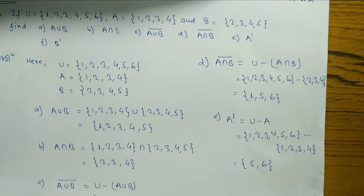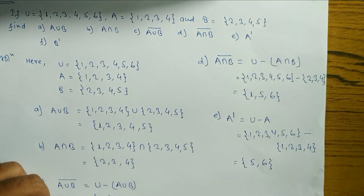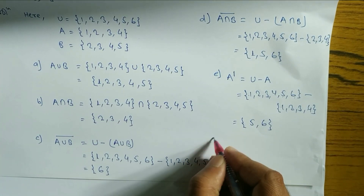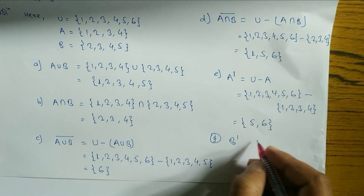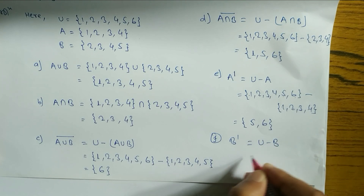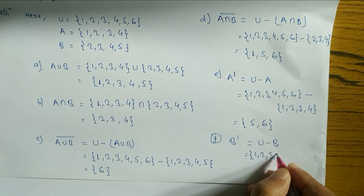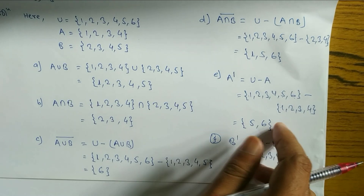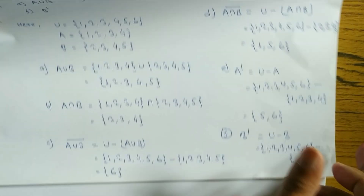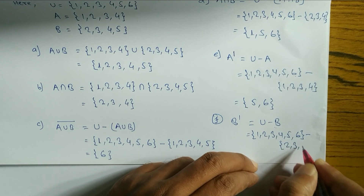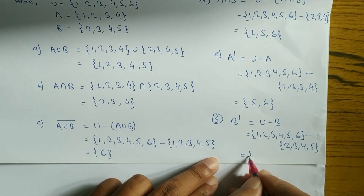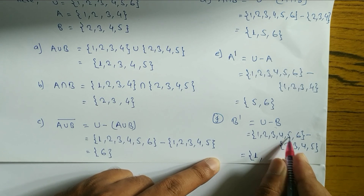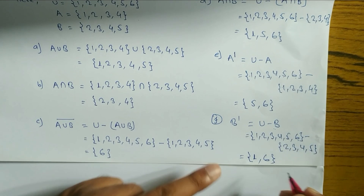Last one is B complement. The formula is U minus B. U = {1, 2, 3, 4, 5, 6} minus B = {2, 3, 4, 5}. Cancelling 2, 3, 4, 5 — what is remaining is 1 and 6. So B' = {1, 6}.